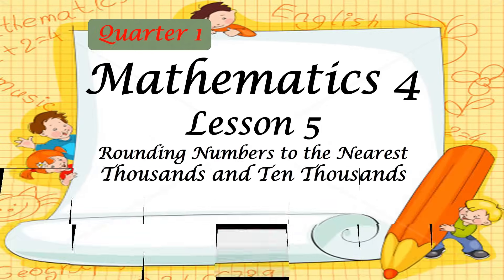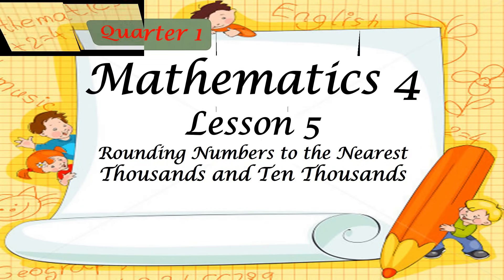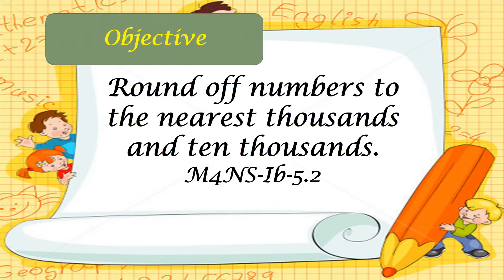Lesson 5: Rounding numbers to the nearest thousands and ten thousands. Objective: the learner should be able to round off numbers to the nearest thousands and ten thousands.